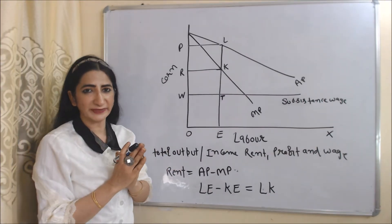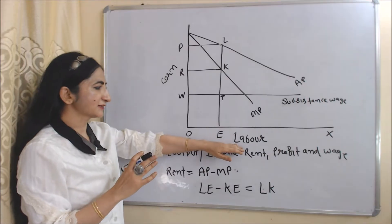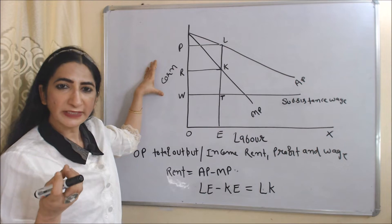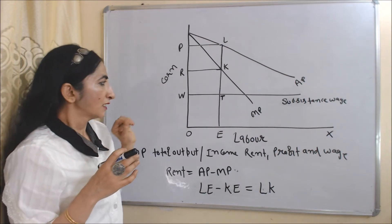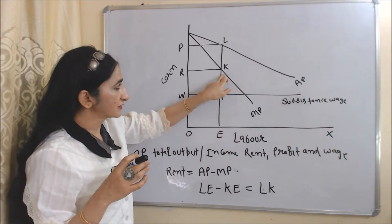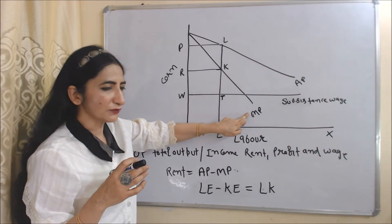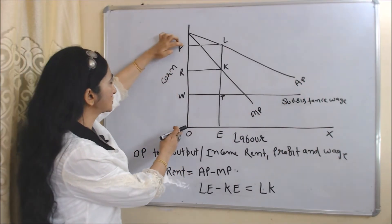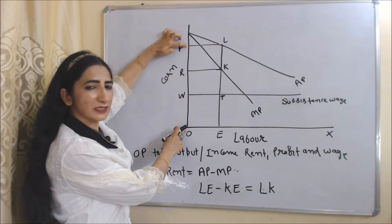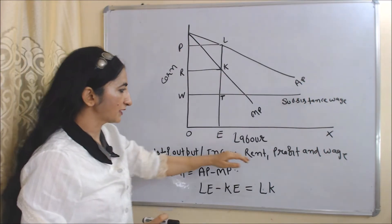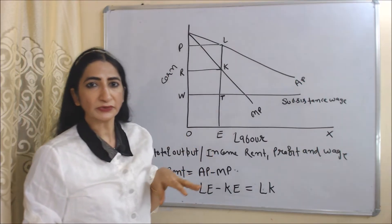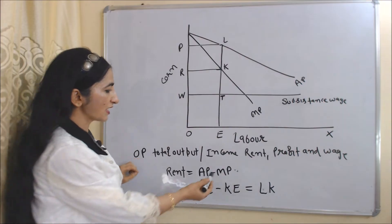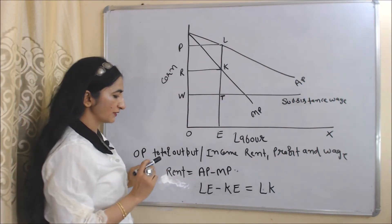Now we understand this theory with the help of a diagram. On the x-axis we have labor, and on the y-axis we have total output of corn, or total income. The MP curve represents marginal product of labor, and the AP curve represents average product of labor. Our total output is OP, or total income is OP. We have to distribute this income between rent, profit, and wages.